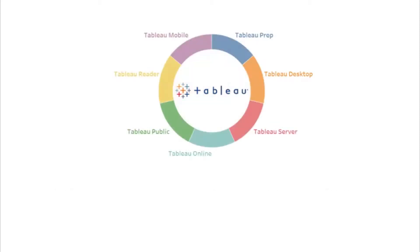Once a dashboard or story is developed, it is necessary that it reaches the audience it was created for. This can be achieved by means of the remaining five products in the list. These products are meant for sharing and collaborating with individuals, teams, or the entire organization.